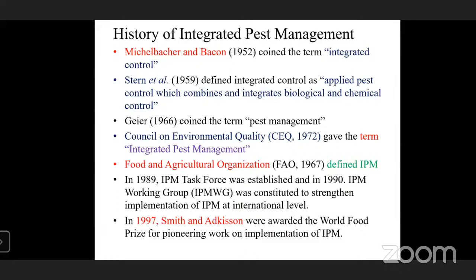Initially, only biological and chemical control were integrated; later, many more components were added. In 1972, the Council on Environmental Quality gave the term 'integrated pest management' — an important point to note. Before that, in 1967, FAO defined integrated pest management, and that definition remains the most accepted one.